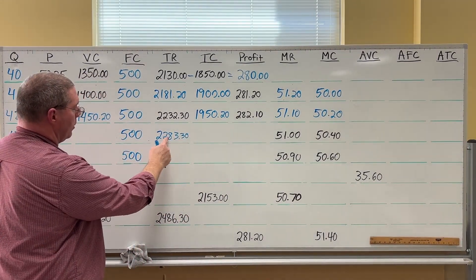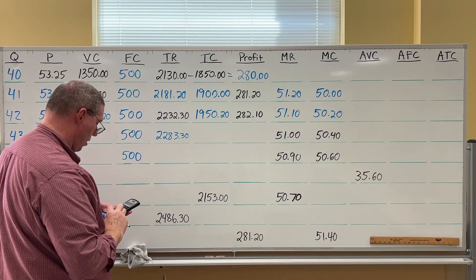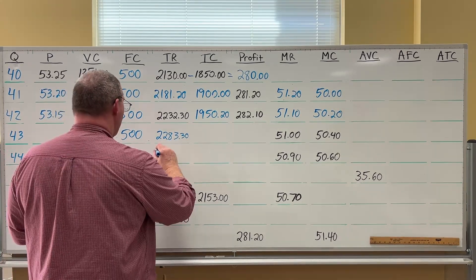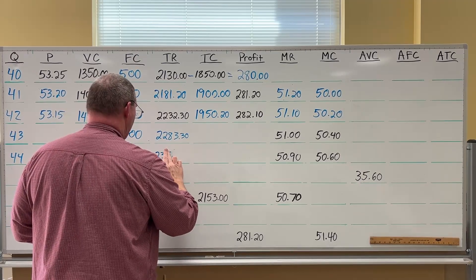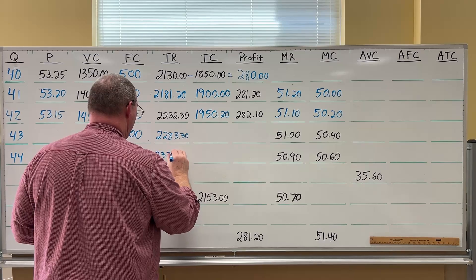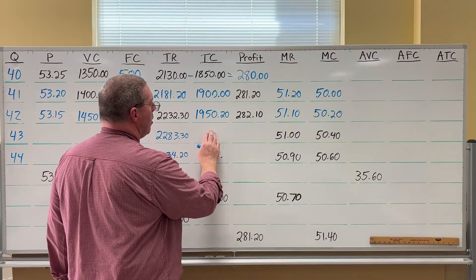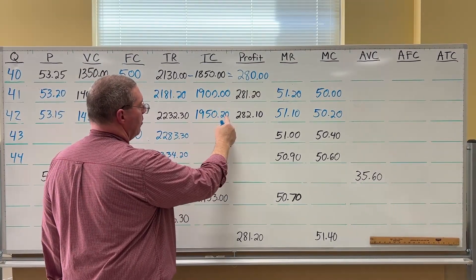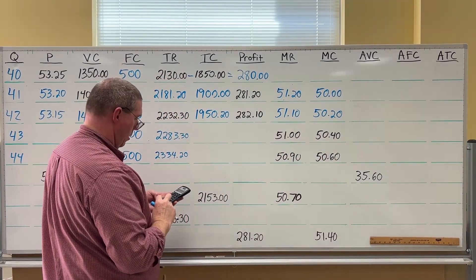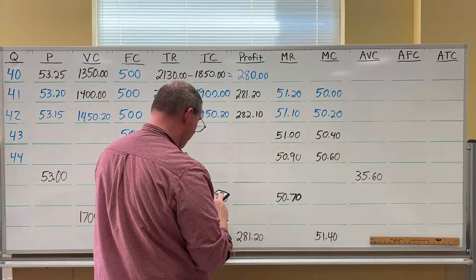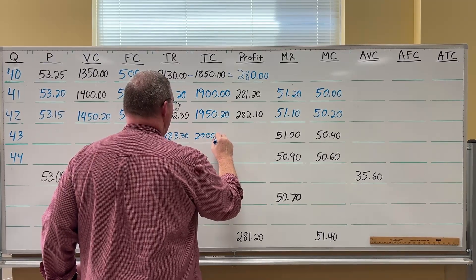Adding $2,283.30 plus $50.90 gives us $2,334.20 for Q=44. Now for total cost: take previous total cost $1,950.20 and add marginal cost $50.40, giving $2,000.60 for Q=43. Then take $2,000.60 and add marginal cost $50.60, giving $2,051.20 for Q=44.